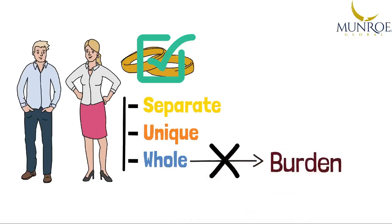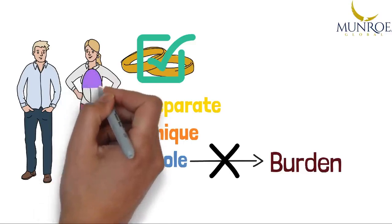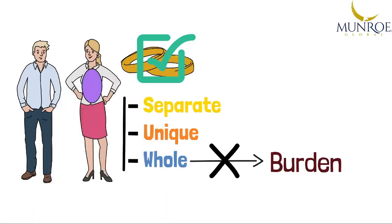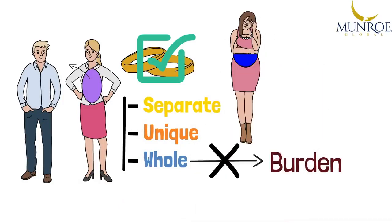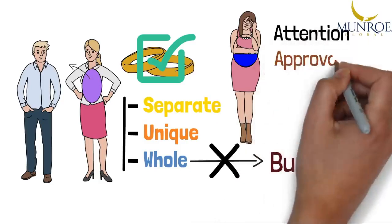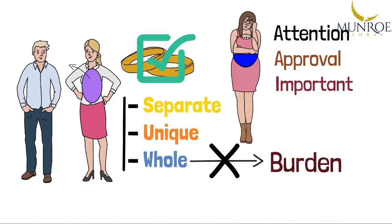You should get married because you got so much excess you need someone to give it to. You shouldn't get married because you're starving for something—you become a burden. You're looking for attention, looking for approval, looking for someone to make you feel important. That's why you get married? You are a burden.